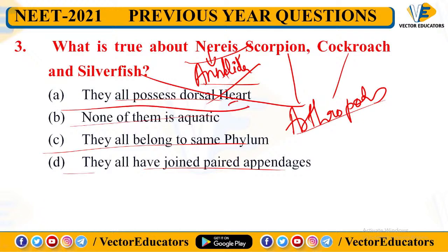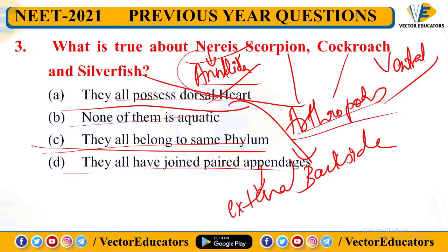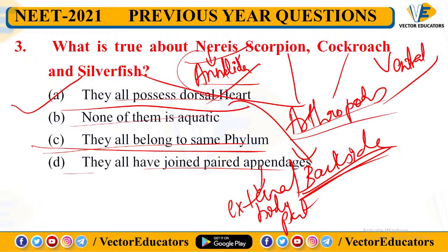Neris is Annelida, while scorpion, cockroach, and silverfish are Arthropoda — so they don't all belong to the same phylum. Scorpion is aquatic, so 'none is aquatic' is also incorrect. Neris doesn't have jointed paired appendages. The common feature is that all four possess a dorsal heart — meaning the heart is located on the back side. So A is our correct answer.